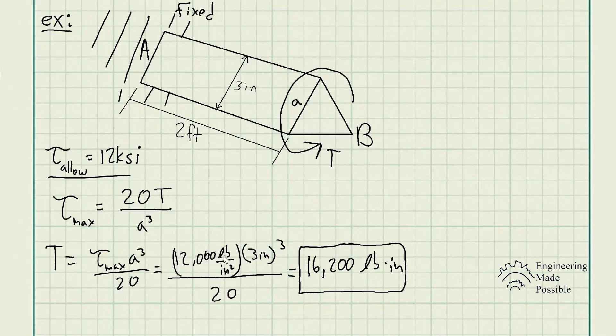That converts the KSI into 1,000 pound per square inch. And so this is the maximum torque that you could apply to this shaft such that it won't exceed this maximum allowable stress.